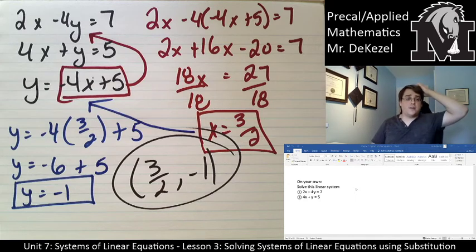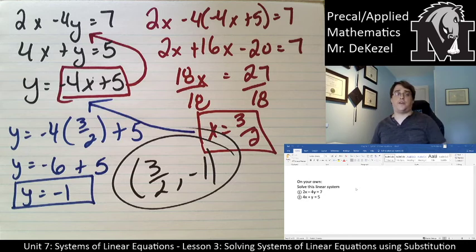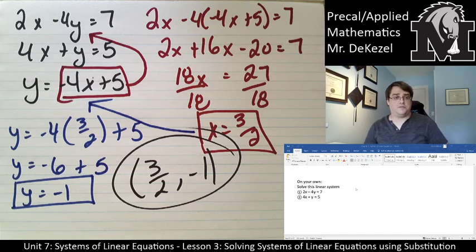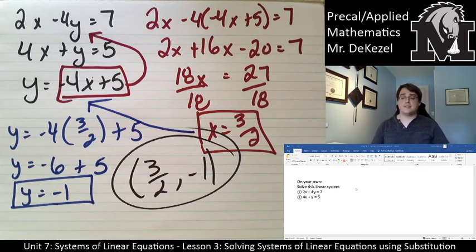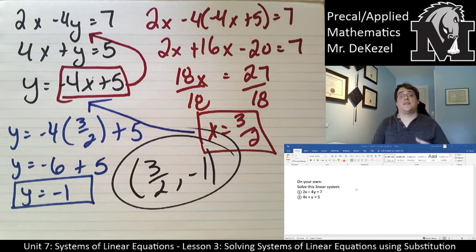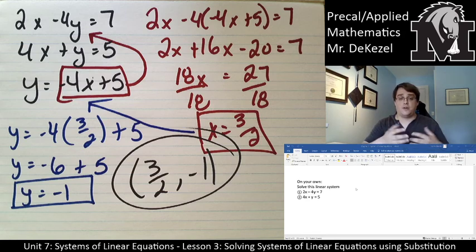It is always the same process. Isolate for a variable. Plug it into the other equation. Find that variable. Then use that variable to find your missing variable, either x or y, does not matter. And write it as a point, because that is truly where those lines intersect, which represents the value of the answer for this problem. If you guys have questions, please let me know. Thanks very much for tuning in.